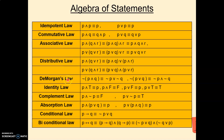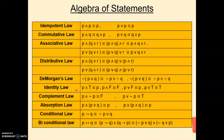The next law is De Morgan's law, which we already studied. Negation of (P∧Q) is equivalent to ¬P∨¬Q. Negation of (P∨Q) is equivalent to ¬P∧¬Q.